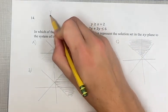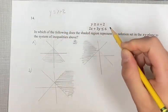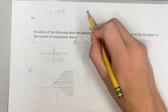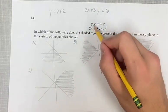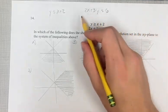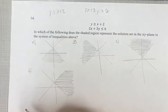First we have to work out the boundary lines. For this first one we have y equals x plus 2, and the second one we have 2x plus 3y equals 6. You take the inequality sign and turn it into an equal sign, and now you have your equation of the lines forming the boundary.